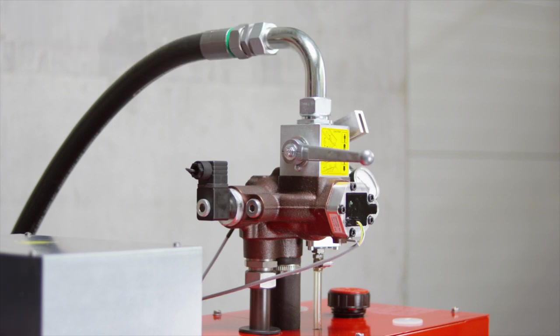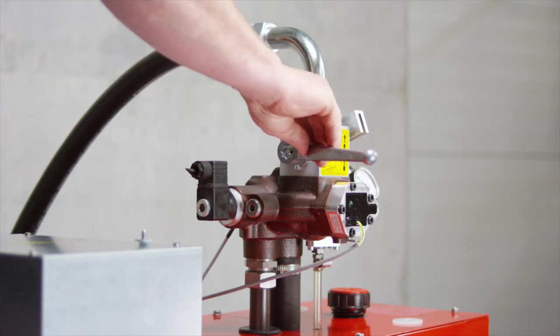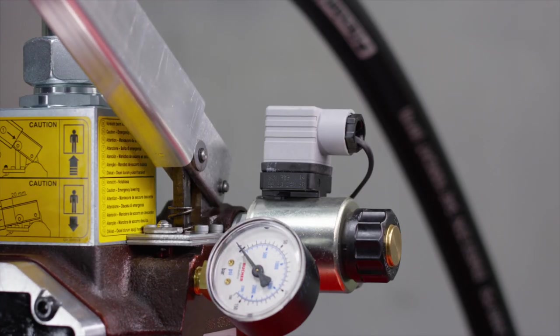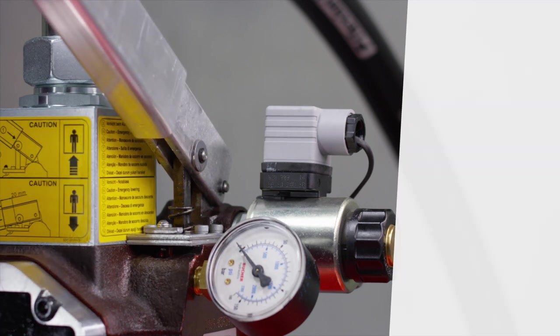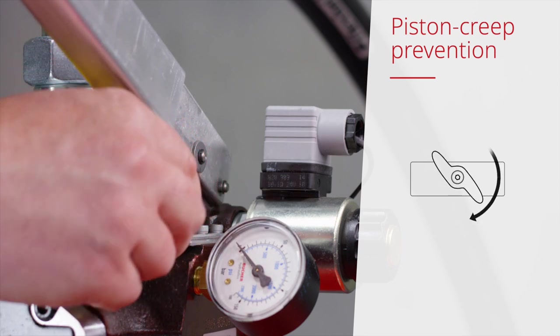Close the ball valve and remove the lever. Push the extension pipe onto the handle stub of the hand pump as far as it will go, then retract by approximately 3 cm. Turn the piston creep preventer clockwise through 90 degrees.